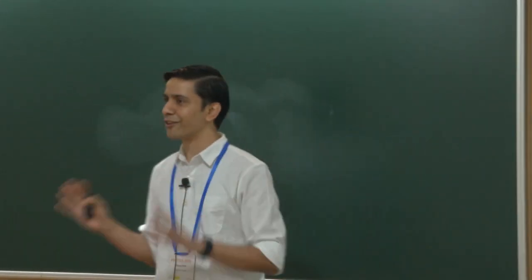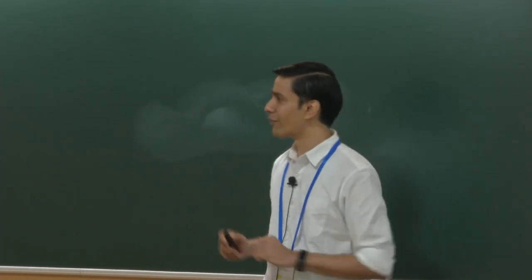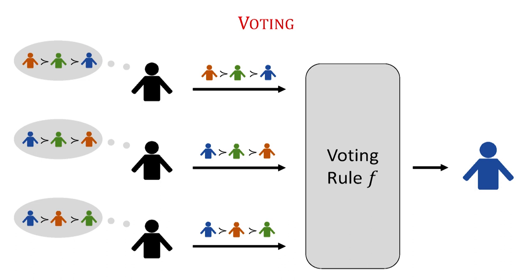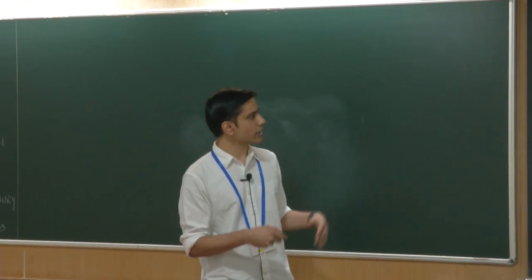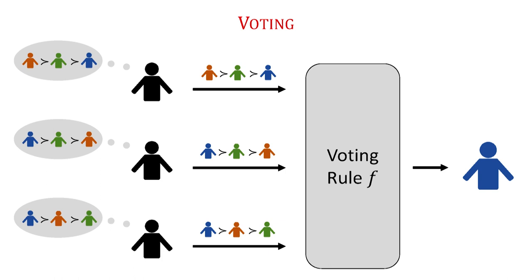Across this entire period, one model of voting was pretty common — what I would call the canonical model: ranked voting. In this model you have voters with ranked preferences over candidates — say red, blue, and green. Each voter reports their rank preference, and these preferences are aggregated by a voting rule F which selects a single candidate as the winner.